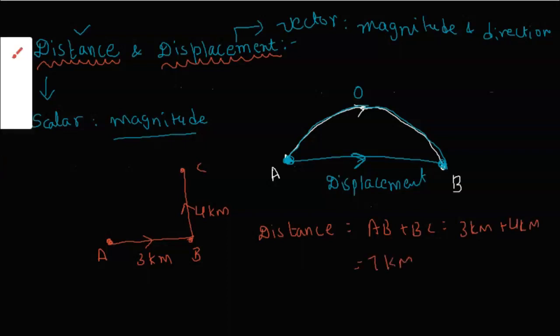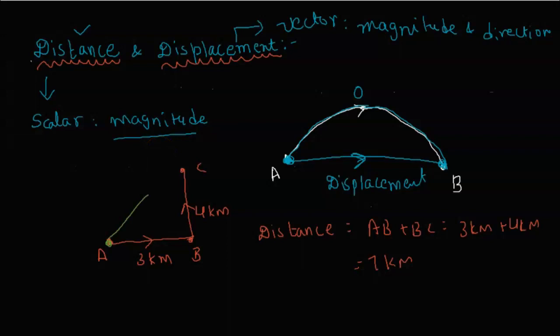Now, if you want to find the displacement, we take the shortest path from the starting point to the final point. Using the Pythagorean theorem, AC equals 5 km. So the displacement equals AC, which is 5 km.